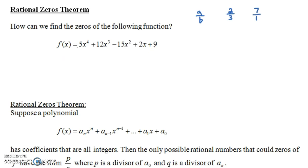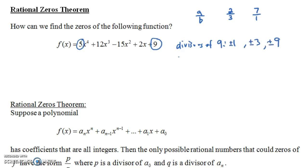What are the possible rational zeros of this function? It turns out that the only possible rational zeros, according to the rational zeros theorem, would be a divisor of the constant term nine divided by a divisor of the leading coefficient five. So the divisors of nine are one, three, and nine — and we consider both plus and minus one, plus and minus three, and plus and minus nine. The divisors of five are one and five — again, plus or minus one and plus or minus five.